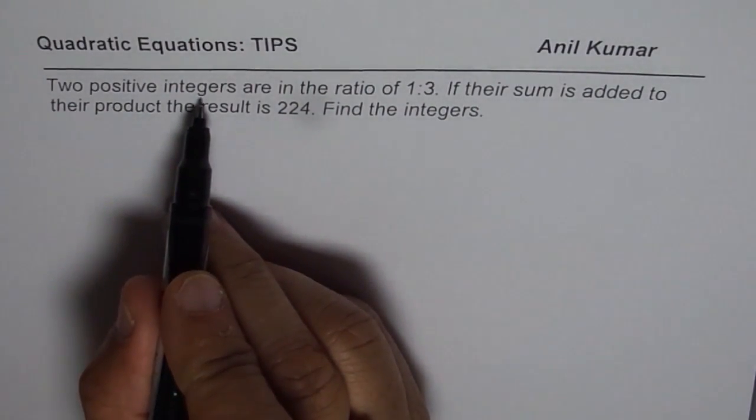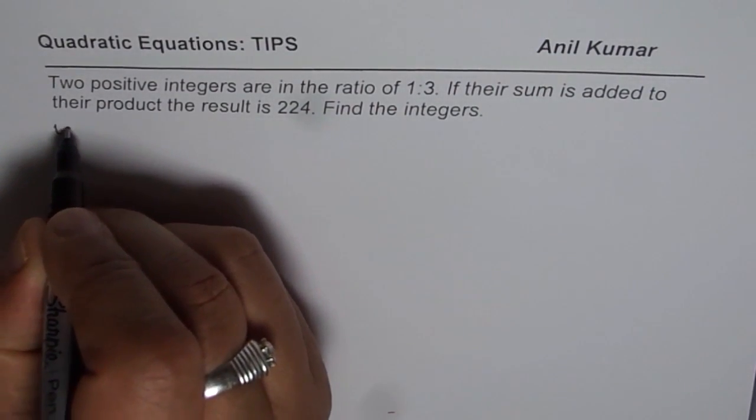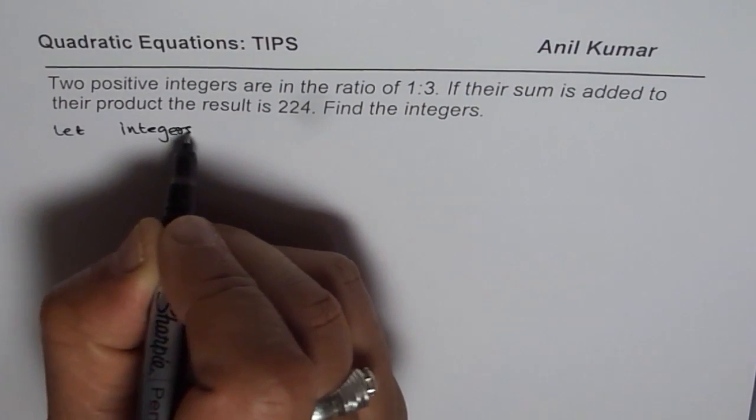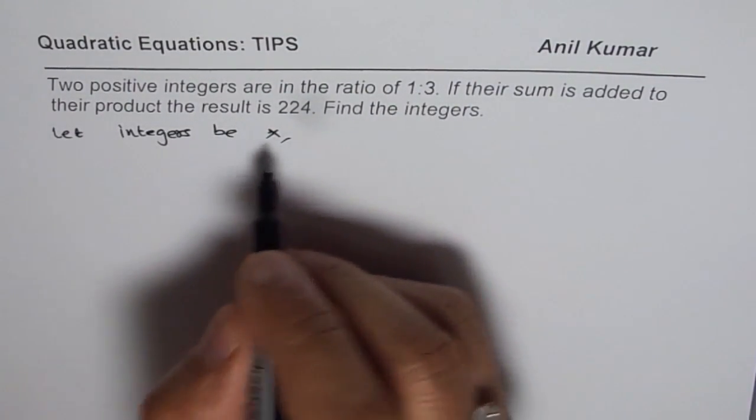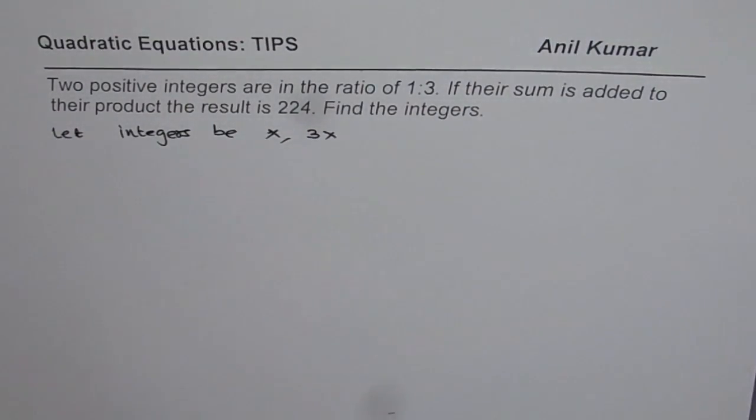We have positive integers in the ratio of 1 is to 3. So if let integers be, let us say x, then the other one is 3 times x. So x and 3x, their ratio is 1 is to 3.